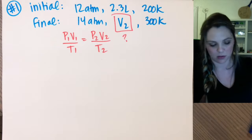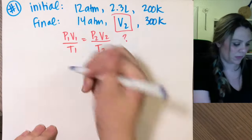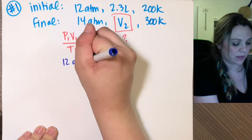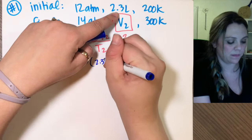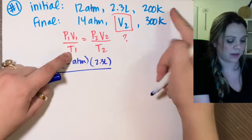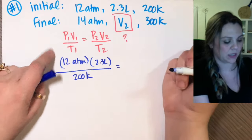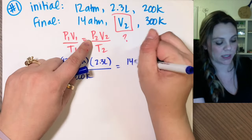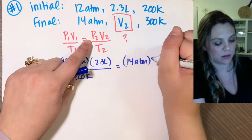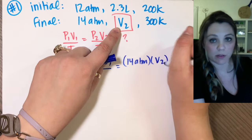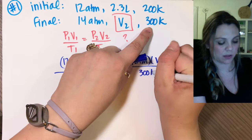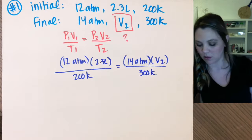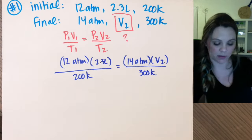P1V1 over T1 equals P2V2 over T2. And the first example, everything is in the units you need to begin with. So, 12 atmospheres is my pressure one, times volume one is 2.3, divided by 200 Kelvin, equals pressure two, 14 atmospheres, times I don't know what my volume 2 is, divided by 300 Kelvin.